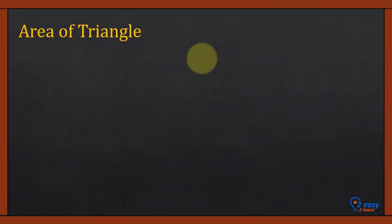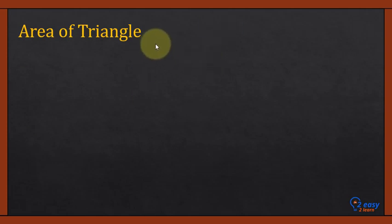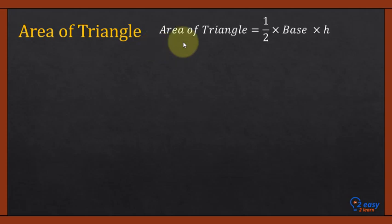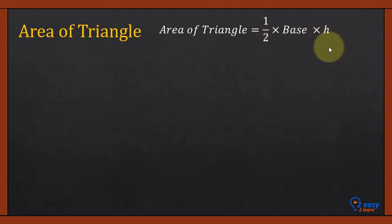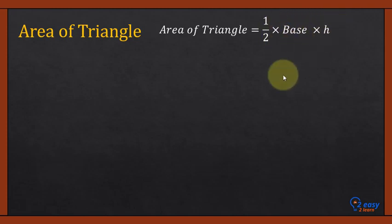Area of Triangle. As we have discussed, we are going to find two types of formula: the geometrical formula and the trigonometric formula. The first one is the geometrical formula. Area of triangle is equal to 1/2 times base times height. It is a very basic and simple formula, but we have to get an understanding of the base and height in a triangle.